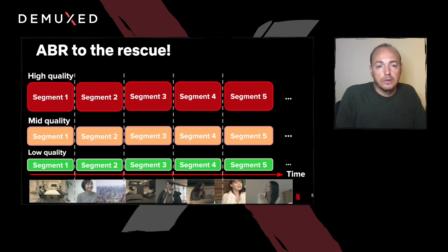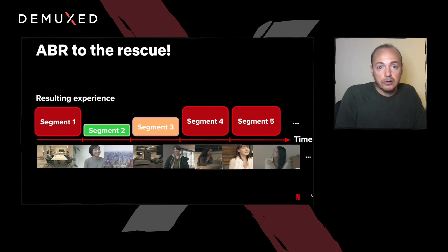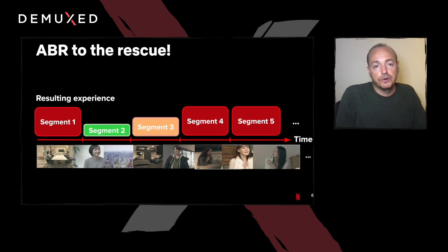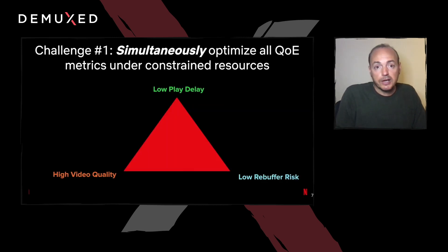To navigate all these constraints, we use adaptive bitrate streaming, also known as ABR. For those not familiar with ABR, it is a method of streaming where the content is encoded at multiple bitrates ahead of time. The ABR algorithm then decides in real time which bitrate to download at a given time and when to start the playback, based on the state of the network and various device characteristics. ABR faces two big challenges. First, when resources are constrained, we need to make trade-offs between our three objectives: play delay, video quality, and risk of rebuffers.